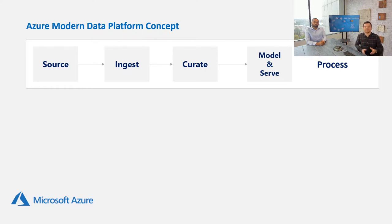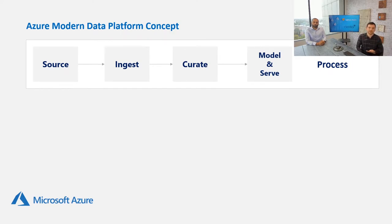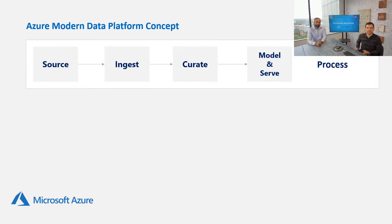Throughout today and your onward journey with Azure, here are four steps to think about as you progressively build out your modern data platform: identify your source systems, ingest your data, curate or transform your data, and then model and serve it — establishing a common model to serve all your use cases to end users, whether data analysts, data scientists, operational managers, or strategic reporting managers.